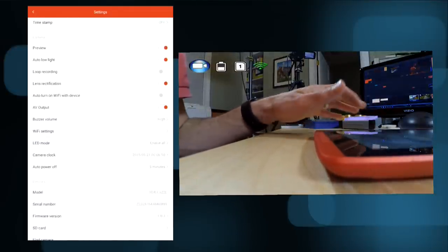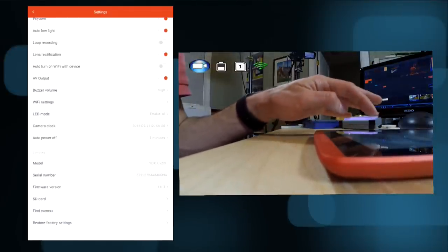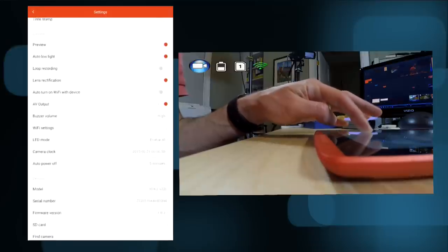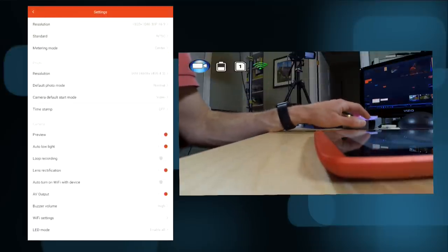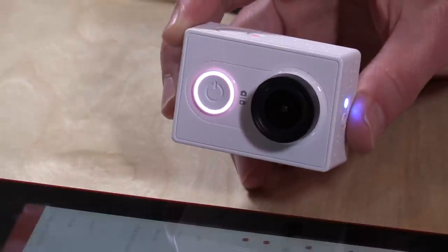Other than that, pretty basic settings. You can adjust some of the resolution on the camera for still images and whatnot, but really nothing else of note. But it's a nice app. It just feels like it's really polished and really well put together. So that is the Xiaomi Yi action camera, good in good light and actually surprisingly good in good light.